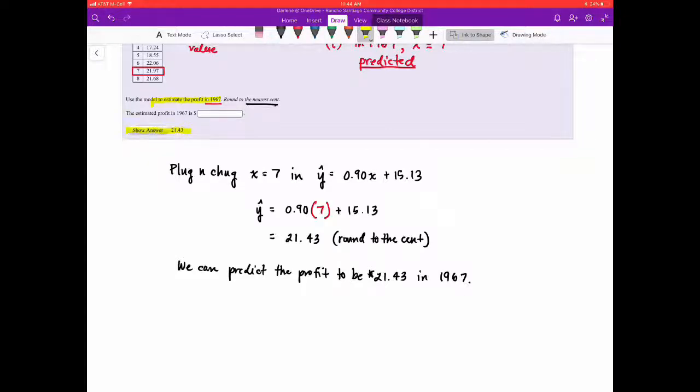On a side note, if we look at 21.43 as the predicted value and look at our observed value, 21.97, that's pretty close, right? So this means that the best fit line, the best fit line in this case, Y-hat, is a good fit. So that's it. Thank you.